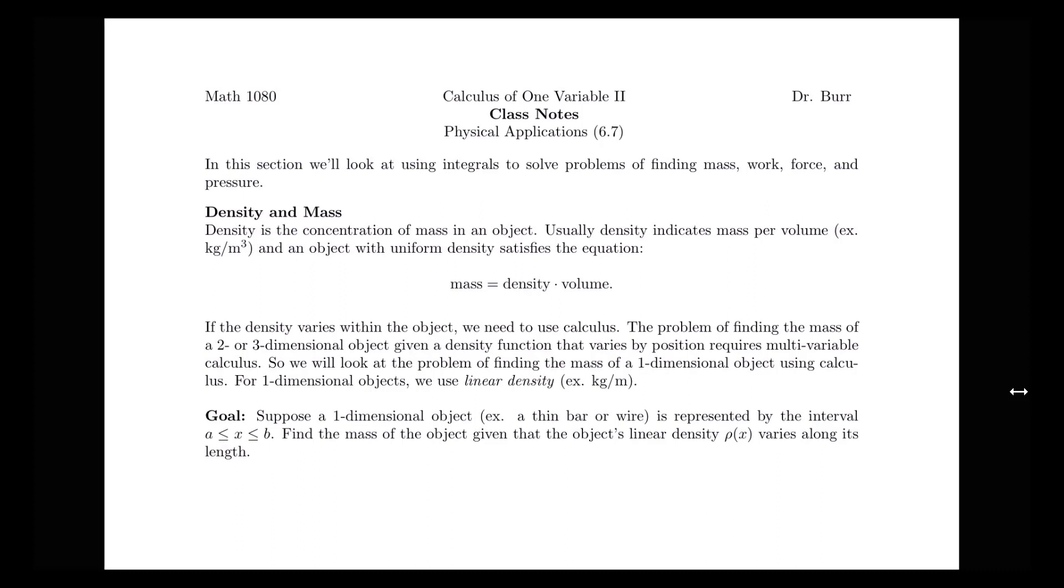For this first video, we're going to be focusing on problems involving density and mass. When we talk about density, we mean the concentration of mass in an object. Usually, density is going to indicate mass per volume, something like kilograms per cubic meter. Although we'll see that we can also have mass per area or mass per length as well.